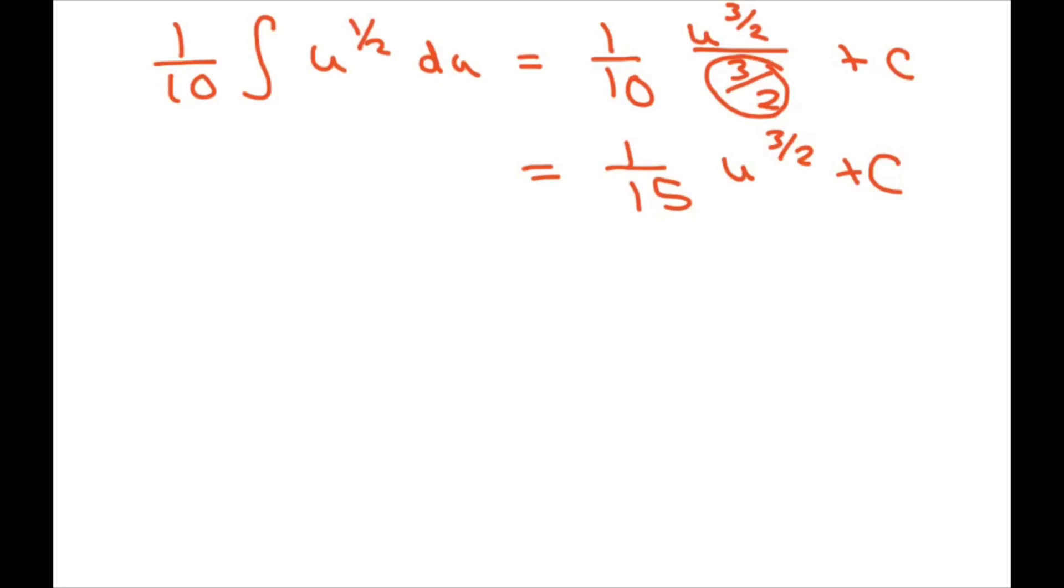Now let's rewrite this, and we're going to get 1 over 15. Our u, remember our u, was 5x squared minus 4. And so when you rewrite this, you're going to get 5x squared minus 4 to the 3 halves plus c.